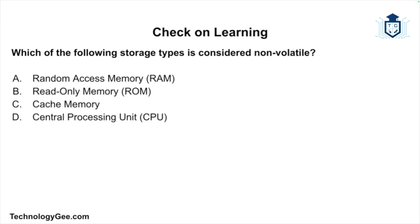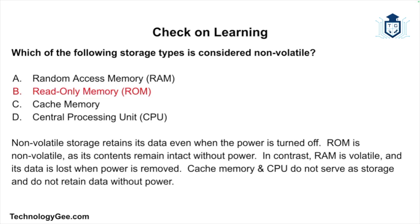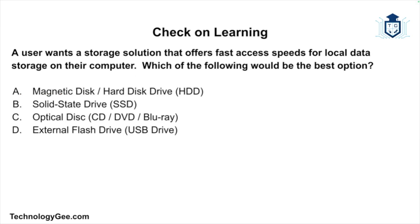Check on learning — which of the following storage types is considered non-volatile: random access memory, read-only memory, cache memory, or the central processing unit? The correct answer is read-only memory, or ROM. Non-volatile storage retains its data even when the power is turned off. ROM is non-volatile as its contents remain intact without power. In contrast, RAM is volatile and its data is lost when power is removed. Cache memory and the CPU do not serve as storage and do not retain data without power.